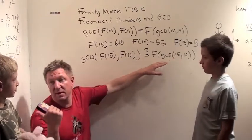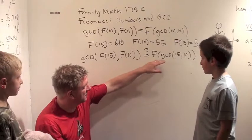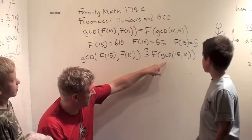And the greatest common divisor of 15 and 10 is? Is 5. So does this equal Fibonacci 5? Can you write Fibonacci 5 there?